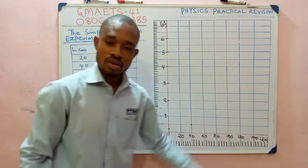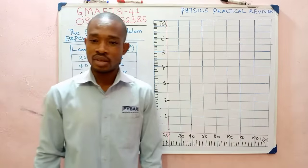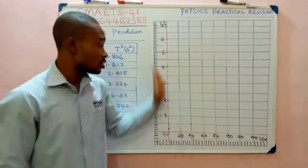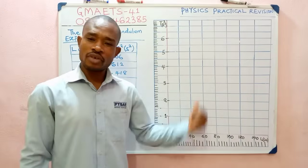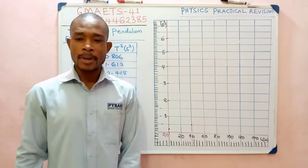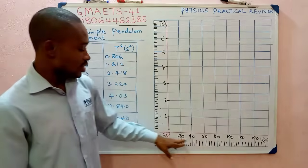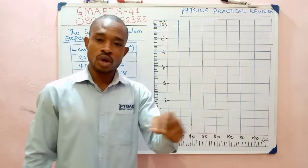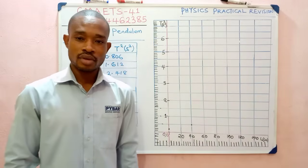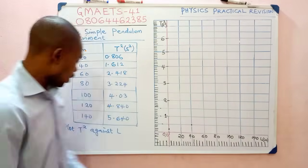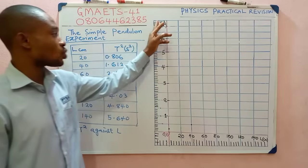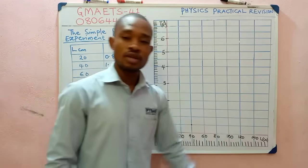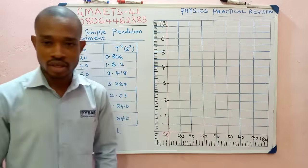We have this graph sketch here with some scale values already chosen. I want to quickly explain why we used this scale — that's very important. On the horizontal axis we used one centimeter equal to 20 units. Since we're plotting t² against L, t² is the vertical axis and L is the horizontal axis.